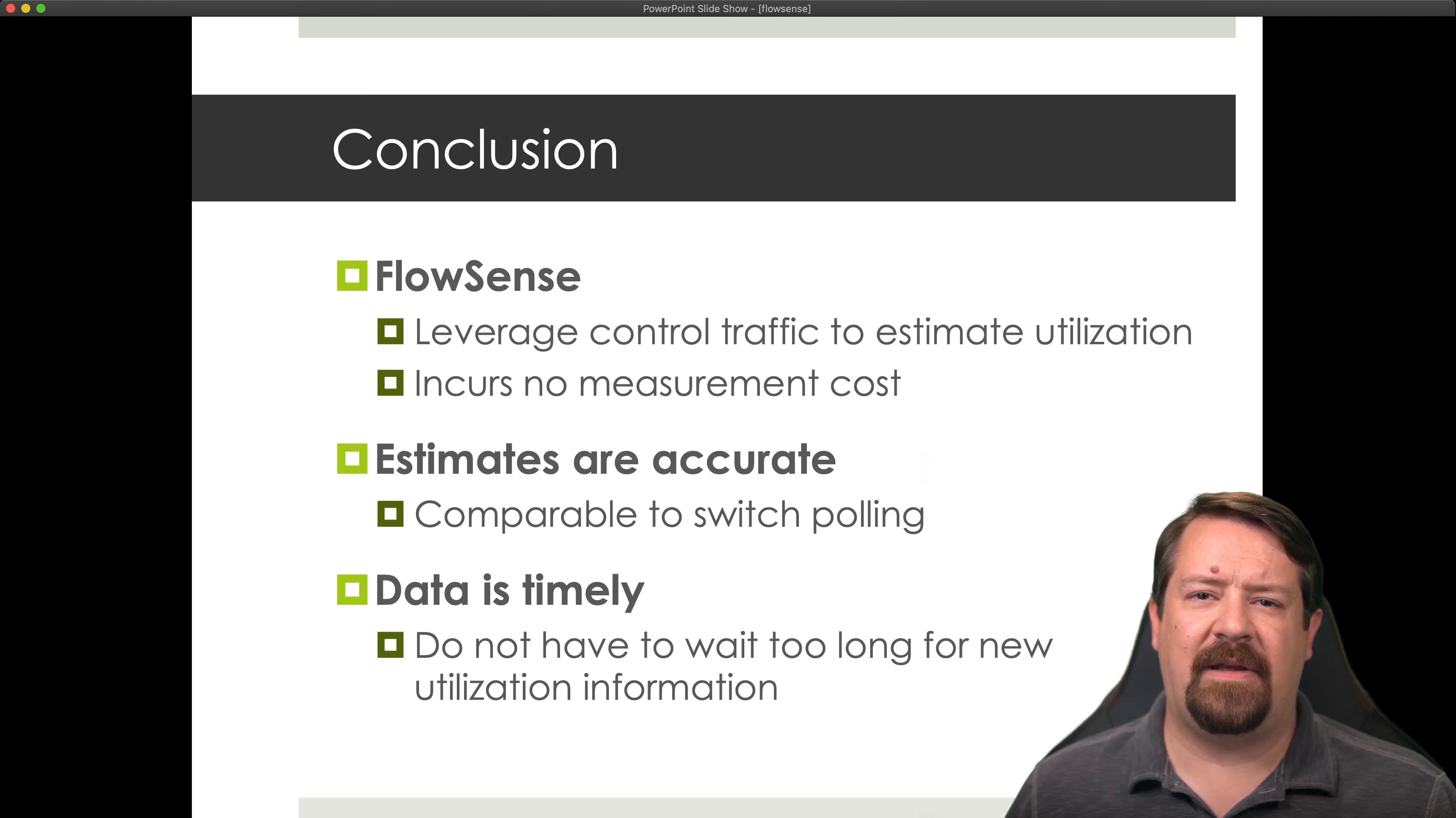So in conclusion, we see that FlowSense is able to use existing control traffic to estimate utilization. And while it's not a perfect estimate, the big selling point here is that it doesn't introduce any new active measurements, or even any new polling or data transport cost to achieve passive measurements. Depending on the timescales involved, the estimates can be quite accurate and don't have to be too delayed to achieve this accuracy.